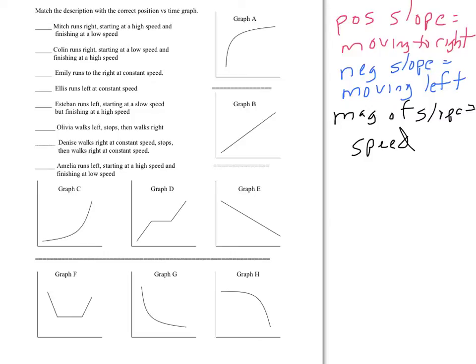For example, graph A is going in an upward direction, so that is a positive slope. I'm just going to write down each one if it's moving right or left. Graph B is moving right because it's a positive slope. Graph C is moving right. Graph D is moving right, although there is one area here where the slope is zero and it is in fact stopped. So I can make a note on that.